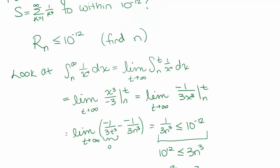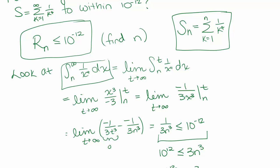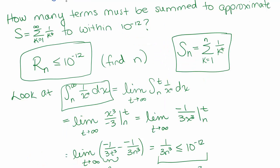So what have we done? We wanted to find for what value of n the remainder is going to be less than or equal to 10 to the negative 12th. That would tell us that s sub n — the sum from k equals 1 to n of 1 over k to the fourth — that finite sum, which we can compute with a computer, would be within 10 to the negative 12th of the actual value. We can't find r sub n directly; if we could, we'd already know how to sum the series. So we've used the integral from n to infinity, because we know from our statement that r sub n is less than or equal to the integral from n to infinity, which we made less than or equal to 10 to the negative 12th.